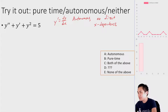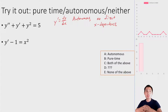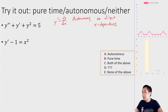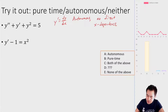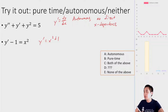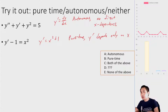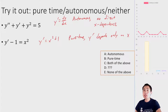Next: y′ − 1 = x². Rewriting as y′ = x² + 1, we see that y prime depends only on x and nothing else — it's pure time. Pure time means the derivative is a function only of the independent variable. Constants don't count against this classification. You can solve a pure time equation by just taking integrals.